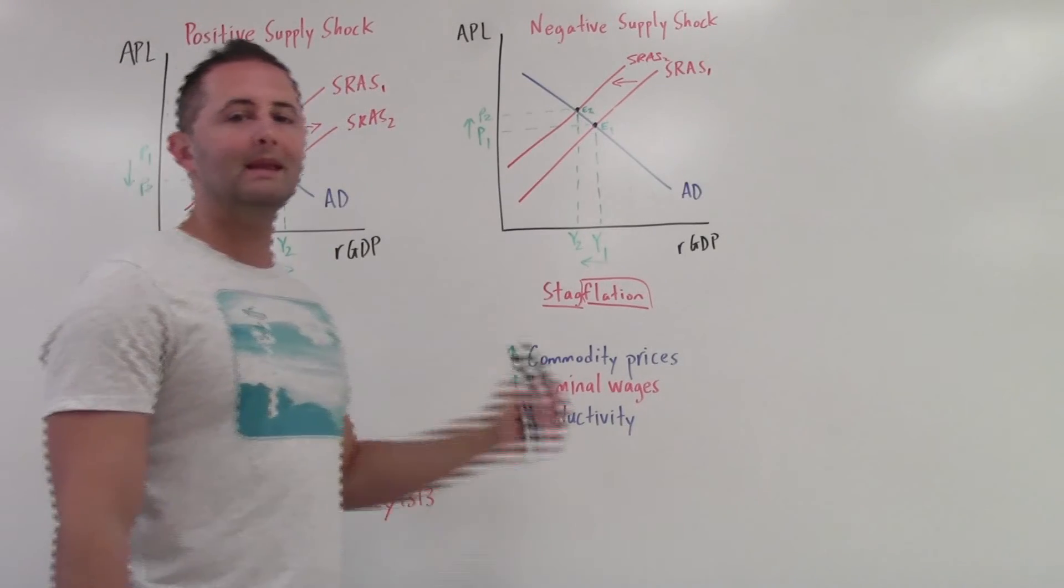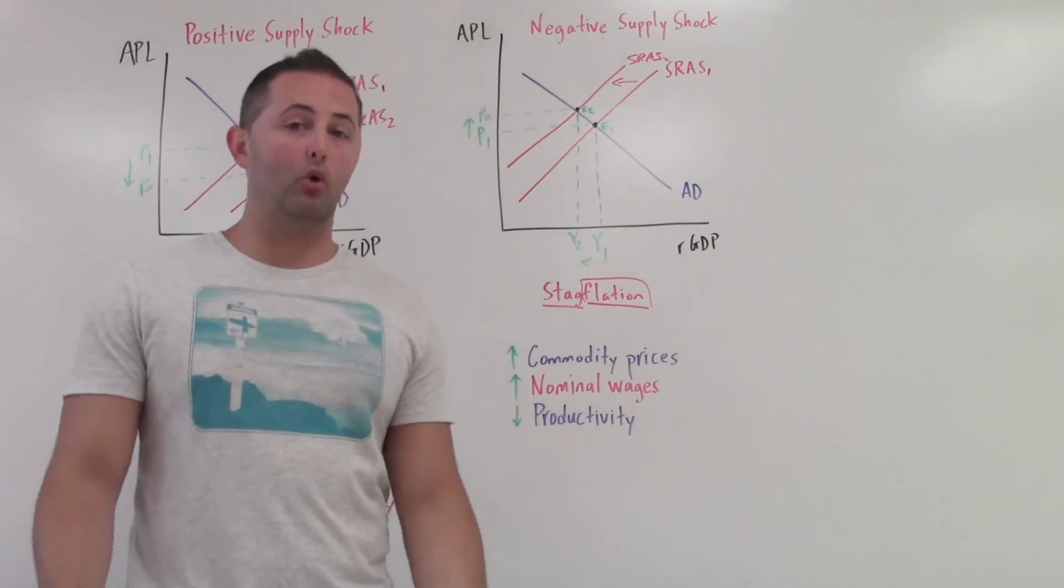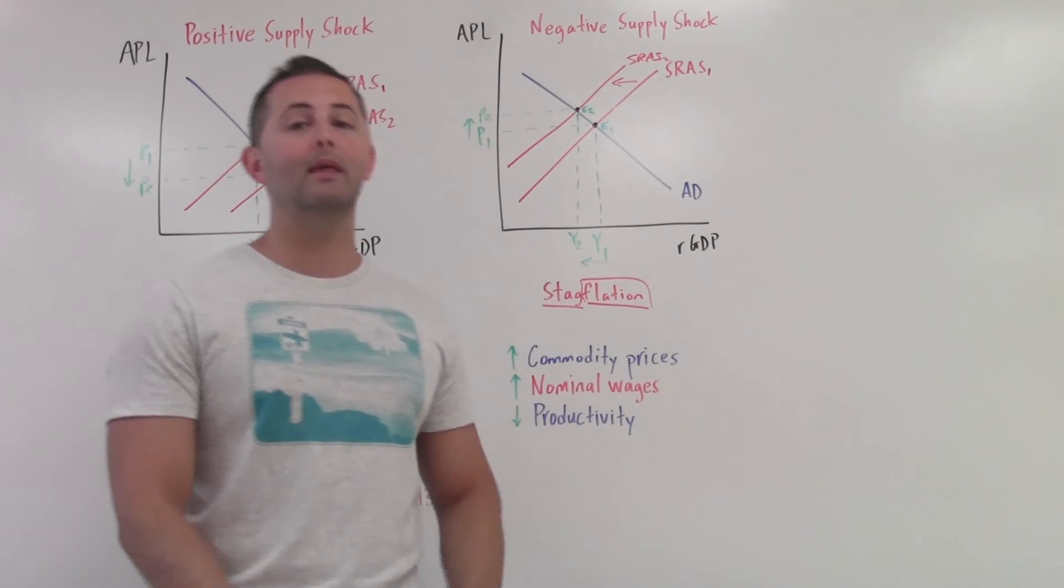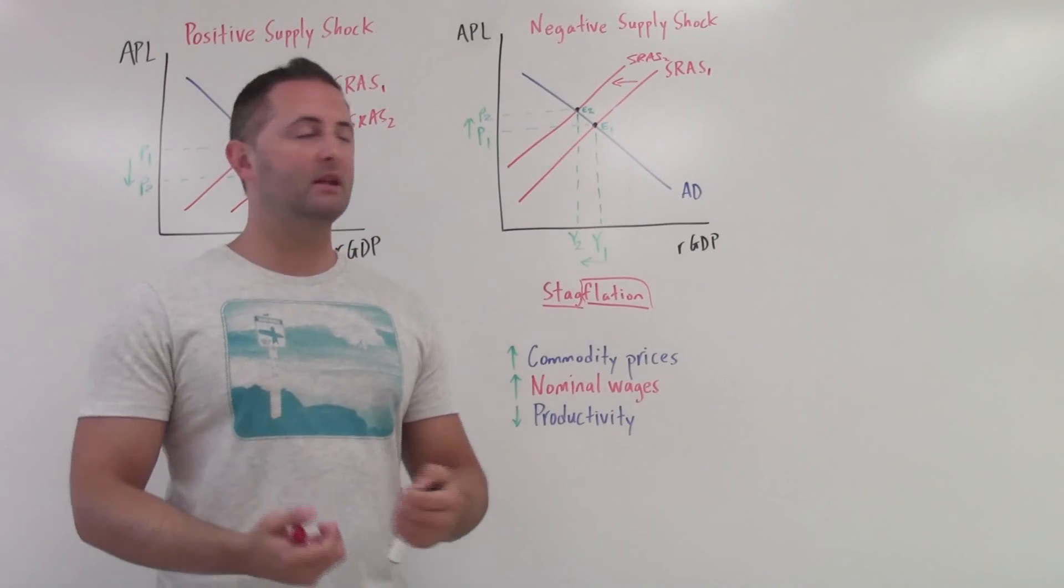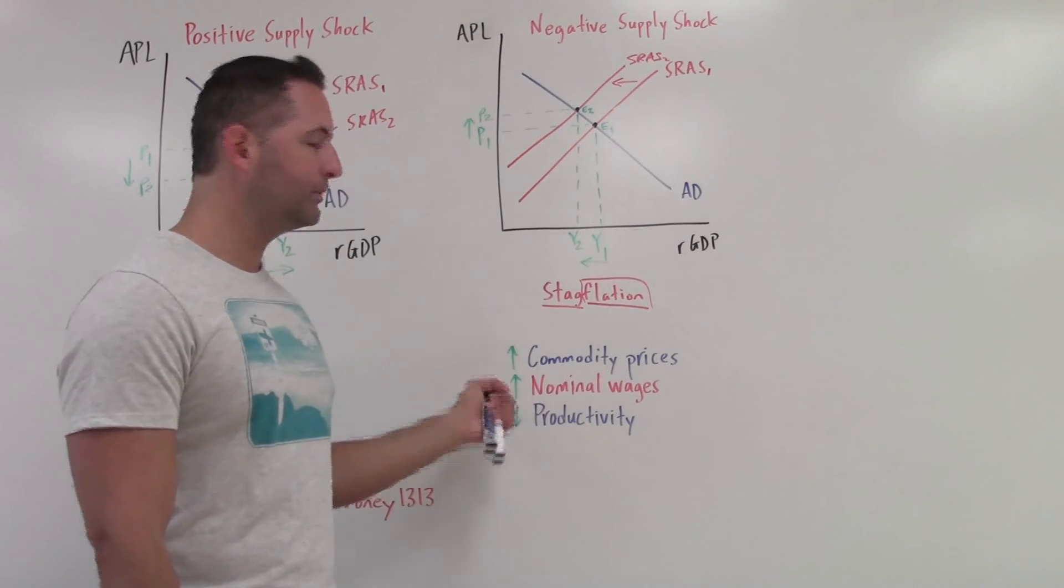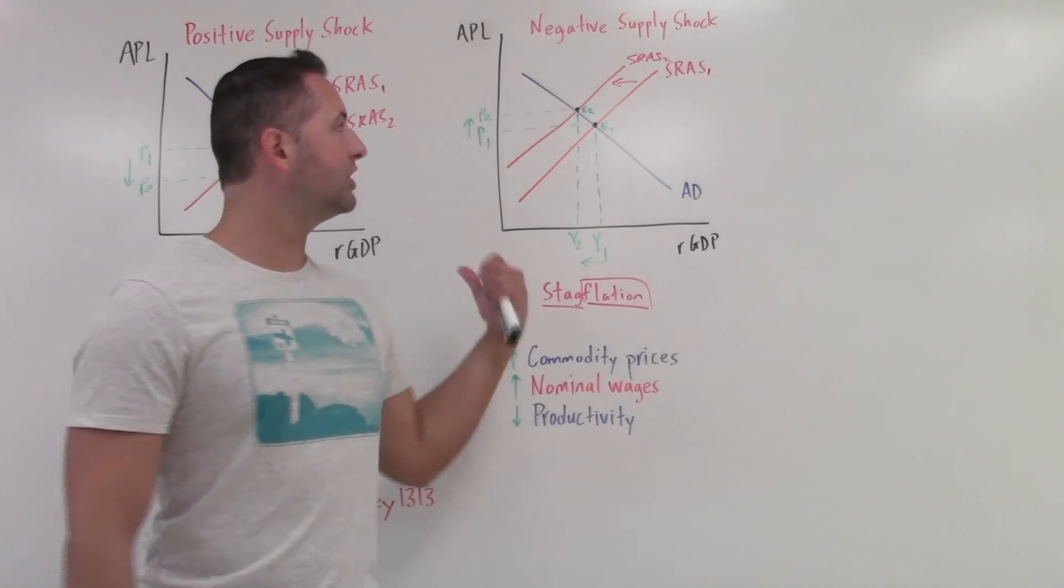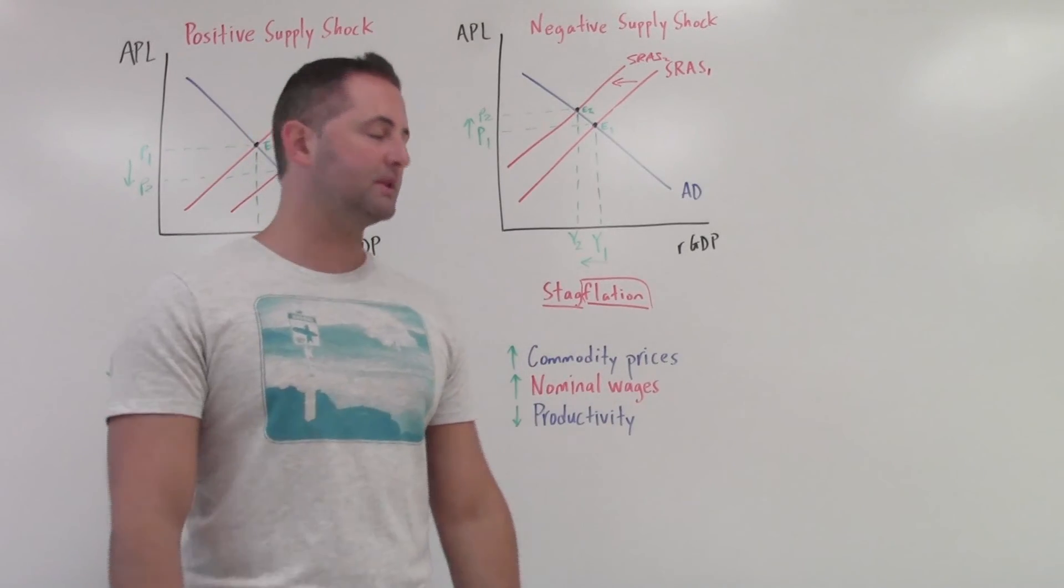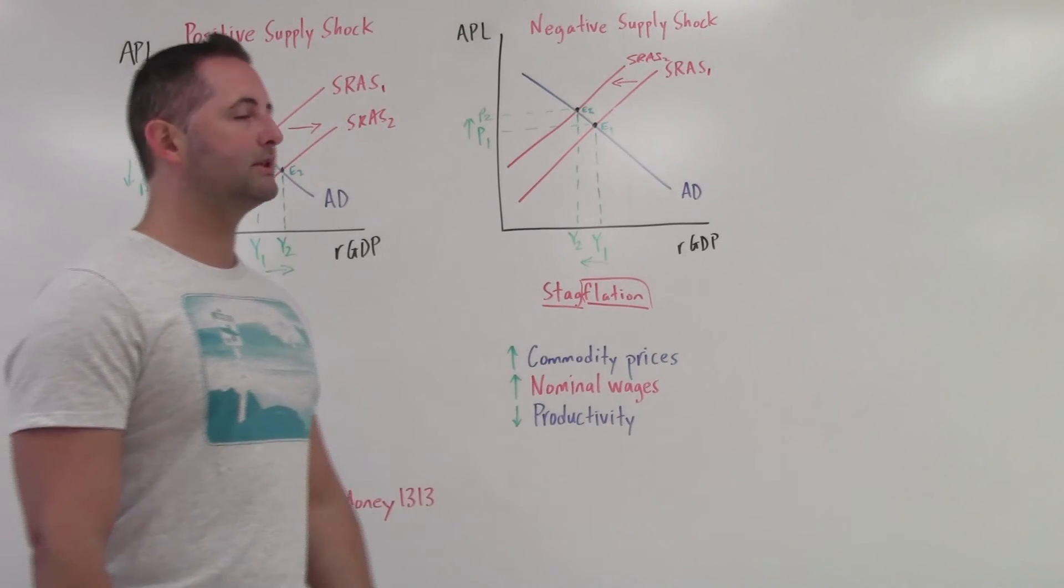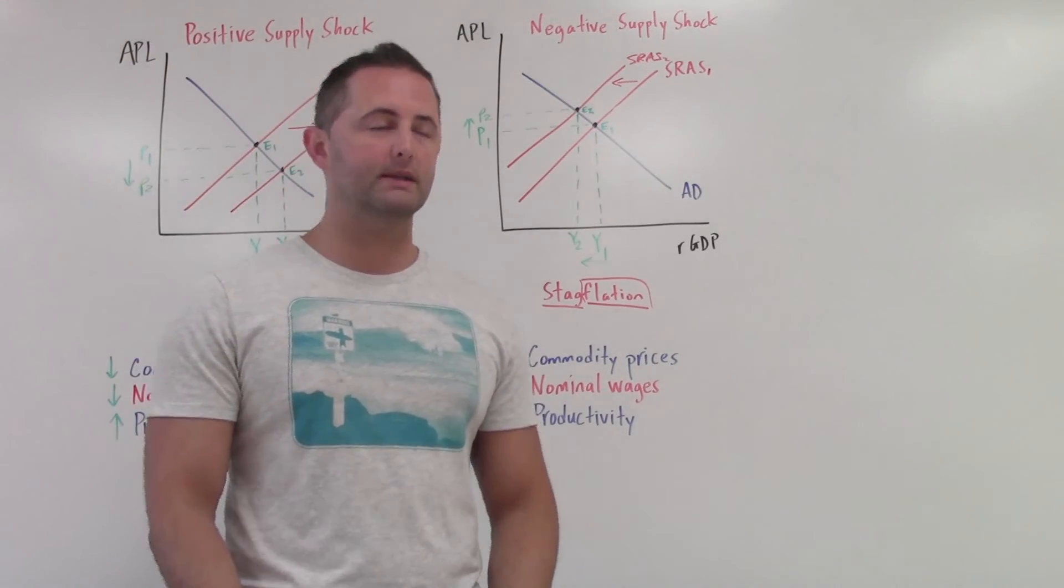What would cause this? A spike in oil prices. So like an oil shortage or crisis, something like that, causes those prices to go up. Has economy-wide significance. It's going to hurt everybody's ability to supply. Higher wages. Shift the SRAS to the left because paying more for workers means they can't afford as many workers is the thought. And a decrease in productivity would also cause this.